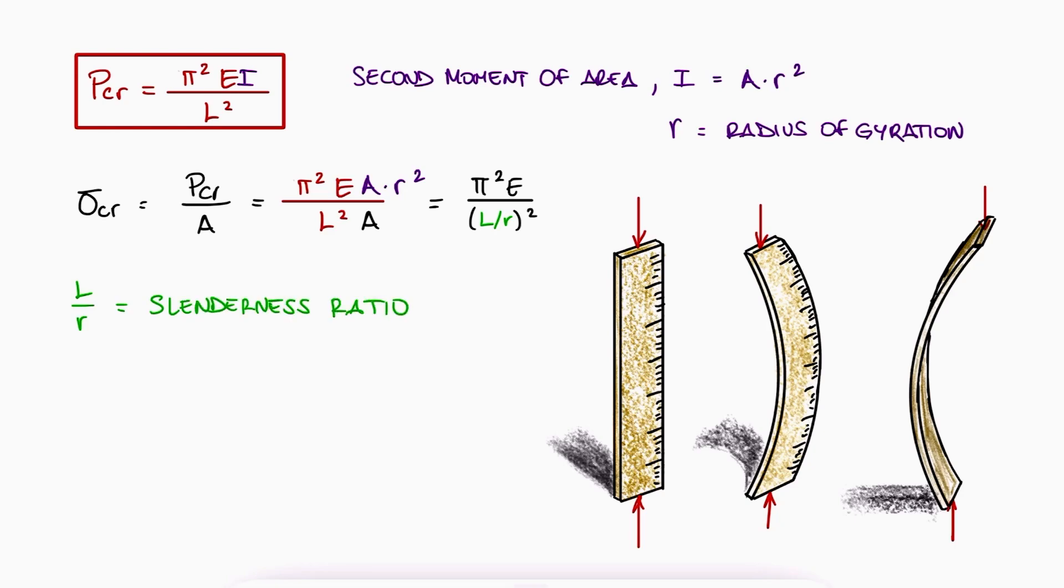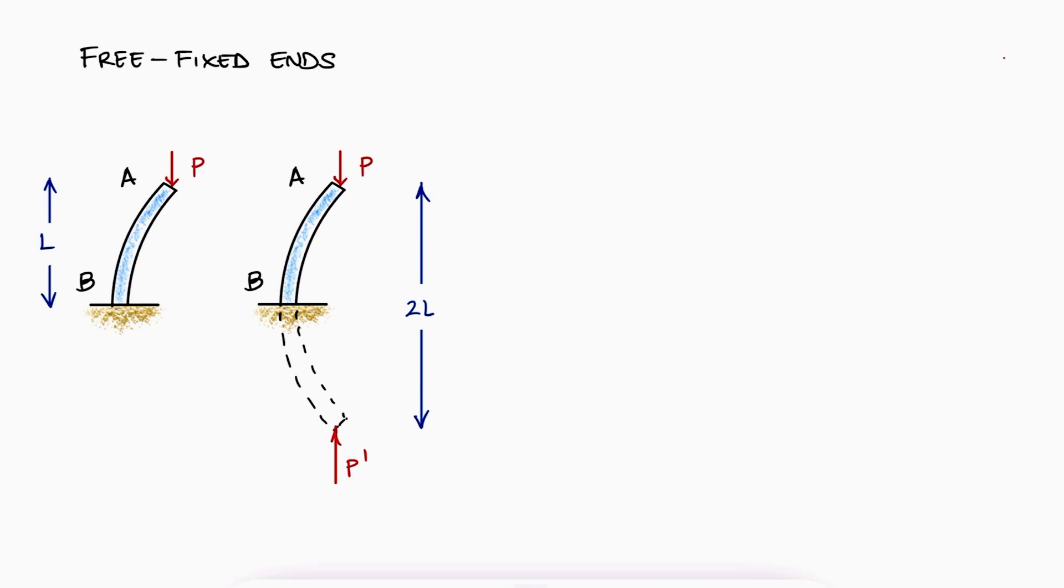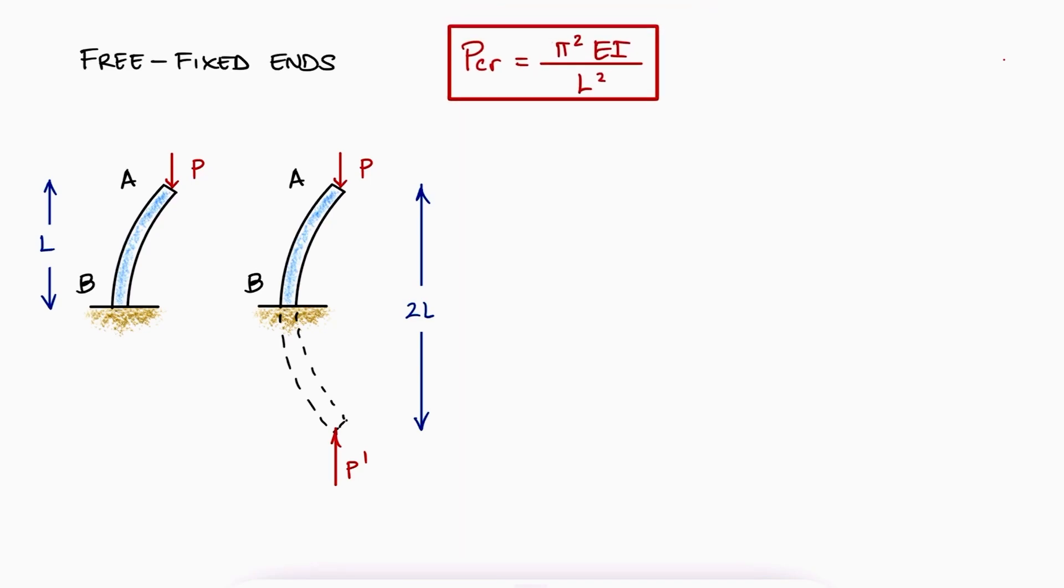Now this was all done for a column that has pin connected ends. Let's take a look at other types of end conditions. A column with one free end at A and a fixed end at B is basically just half the column that we were just analyzing, meaning half a pin connected column. This means that we can calculate the critical load P if we use 2L instead of L.